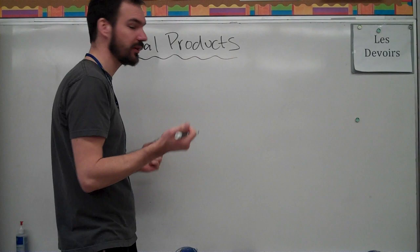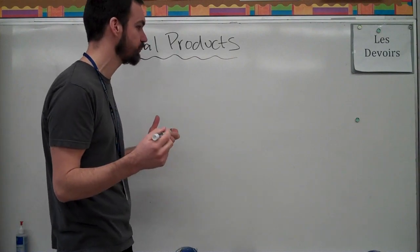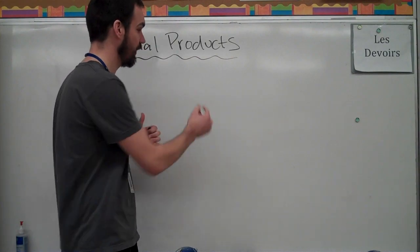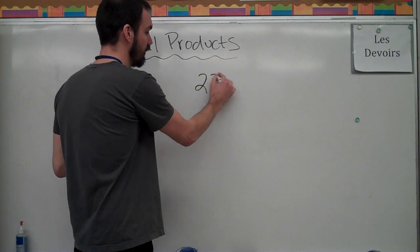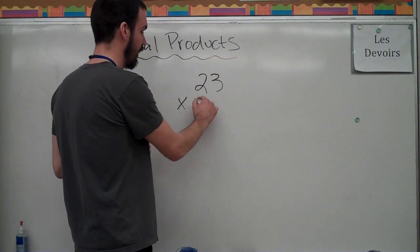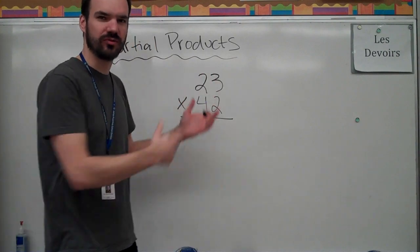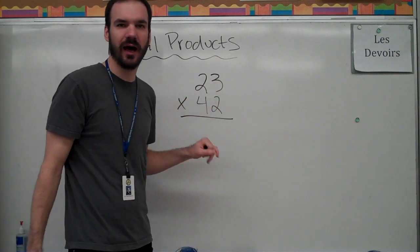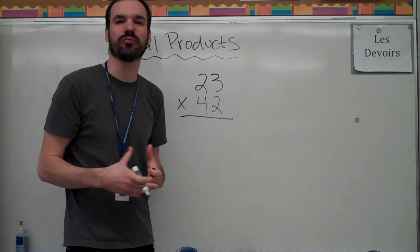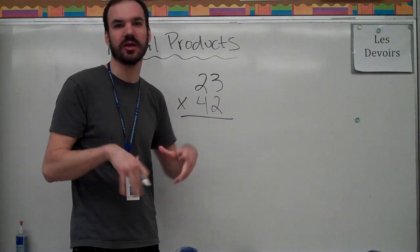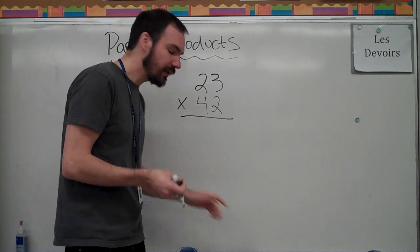Now, when you and I went to school, we learned to do multiplication like this. We would take 23 times 42, let's say, and then we would do sort of a trick to get the answer that didn't really explain to us what was really happening in terms of multiplication, in terms of place value.